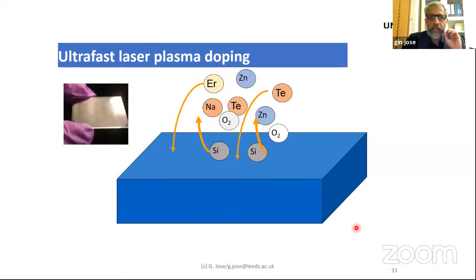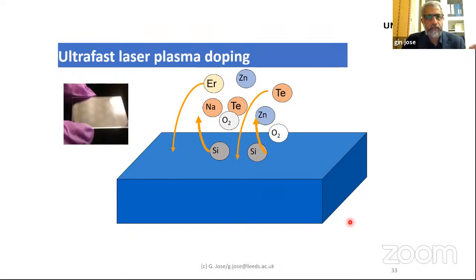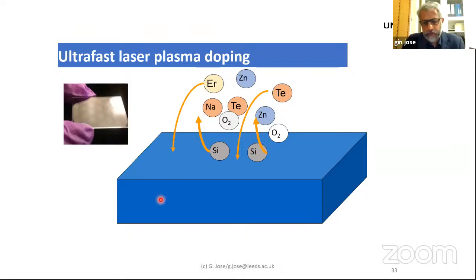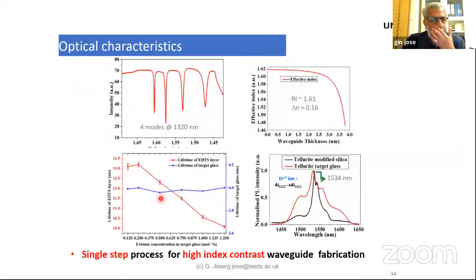The ultrafast laser plasma doping is the key technology we developed in our research group for various applications in photonics — introducing new ions into the surface of a material and engineering it to create photonic functionalities. It can also provide mechanical functionality, which we will discuss as well.